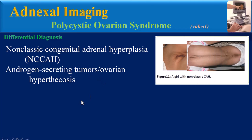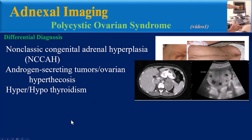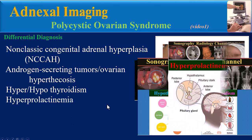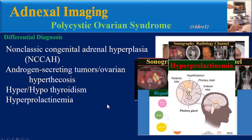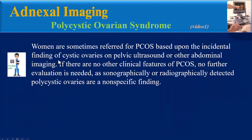Differential diagnosis for PCOS includes non-classic congenital adrenal hyperplasia, androgen-secreting tumors, ovarian hyperthecosis, hyper- or hypothyroidism, and hyperprolactinemia.